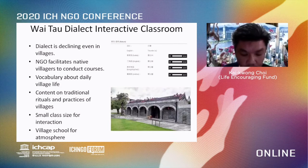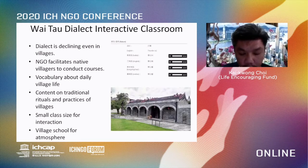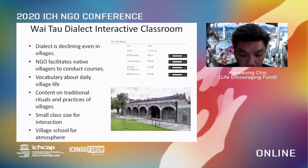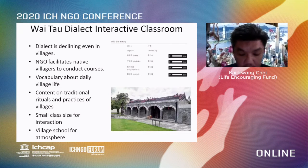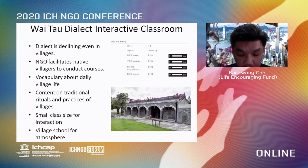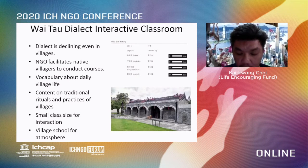The first domain is oral traditions and expressions. The corresponding activity is a vital dialect in the active classroom. The local dialect is declining even in villages. The NGO facilitates native villagers to conduct dialect courses using vocabulary drawn from daily village life. The content is focused on the traditional rituals and practices of villages. Smaller class sizes encourage participants to interact by speaking with one another, and classes are conducted in a village school on weekends to encourage the learning environment.